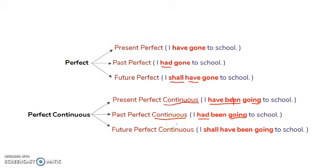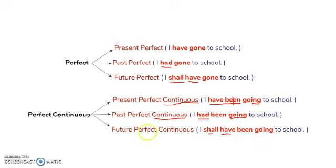Finally, future perfect continuous: 'I shall have been going to school.' How will you know this is future? Because 'shall' is used. 'Have' shows it is a completed action, 'been' again shows completion, and 'going' is the continuous form.